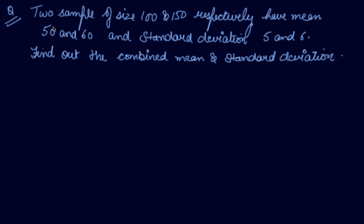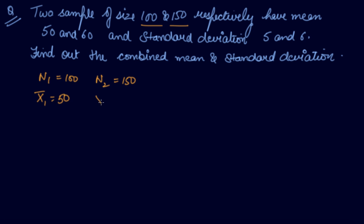The question: two samples of size 100 and 150 respectively have means 50 and 60, and standard deviations 5 and 6. There are 2 samples, so let the 1st sample be group 1 and the 2nd sample be group 2. N1 is 100, N2 is 150; mean of 1st series is 50, mean of 2nd series is 60; standard deviation of 1st sample is 5 and of 2nd sample is 6.